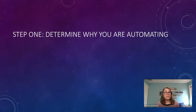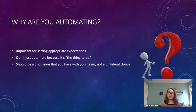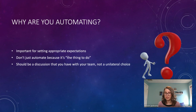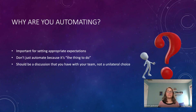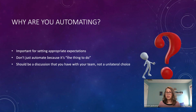Step one is to determine why you are automating. This is important because you need to set appropriate expectations. You should not just be automating because it's the thing to do — you should have genuine reasons. It should be a discussion with your team, not a unilateral choice, because you and your team are going to work on this automation together. This is even more important with mobile automation because it's so tricky.